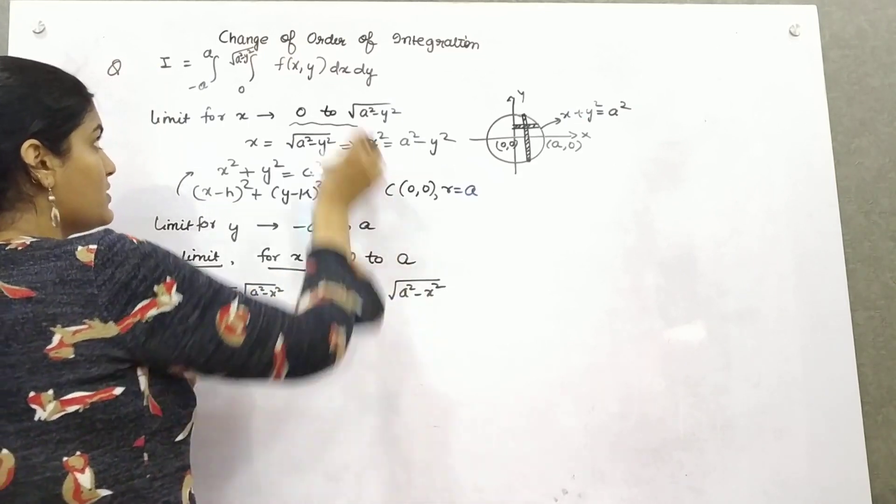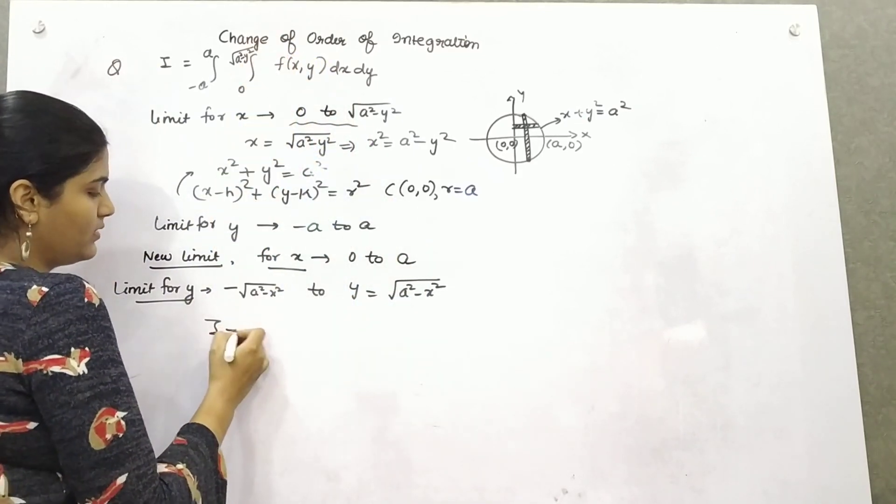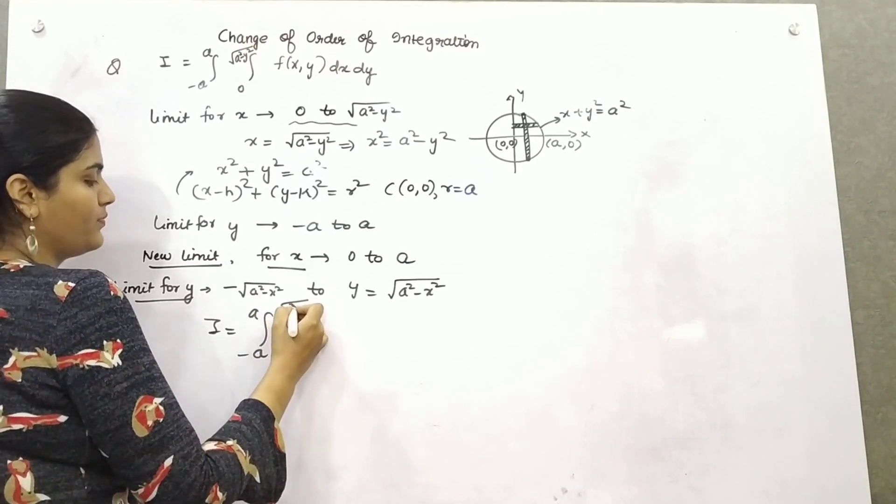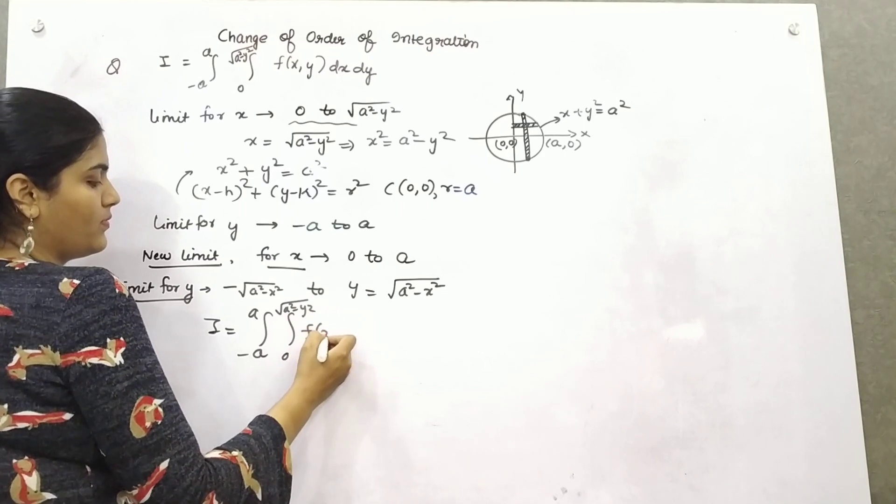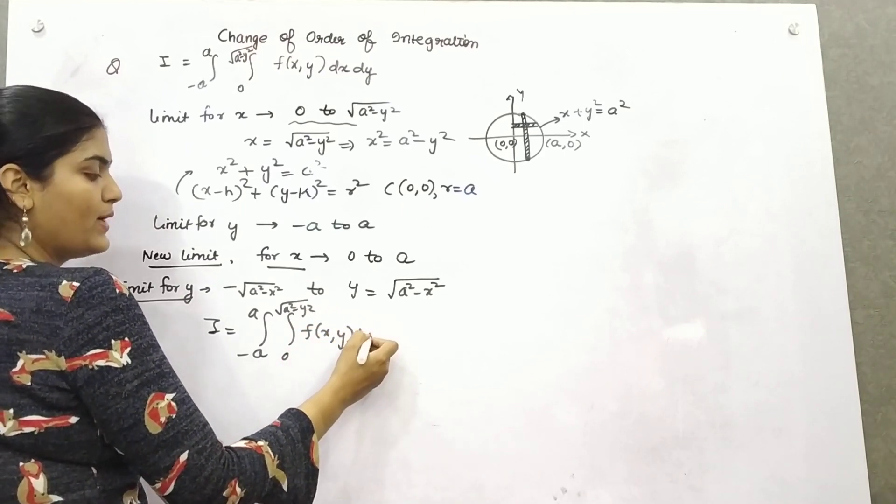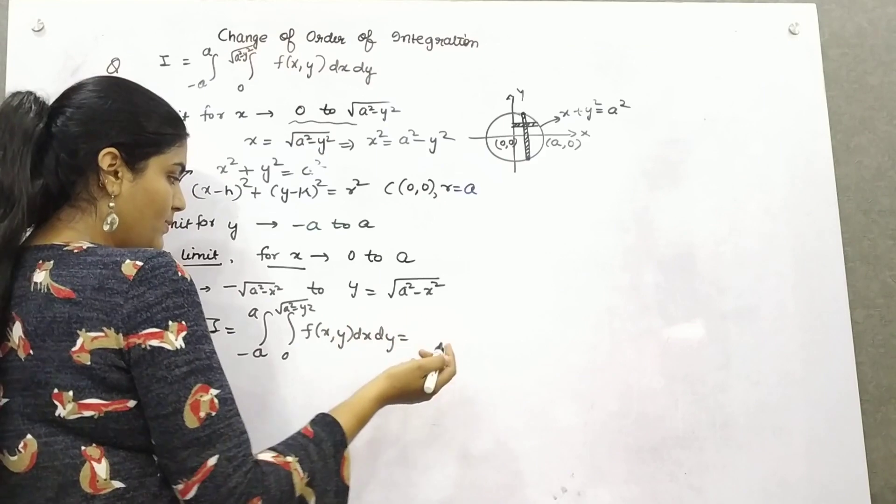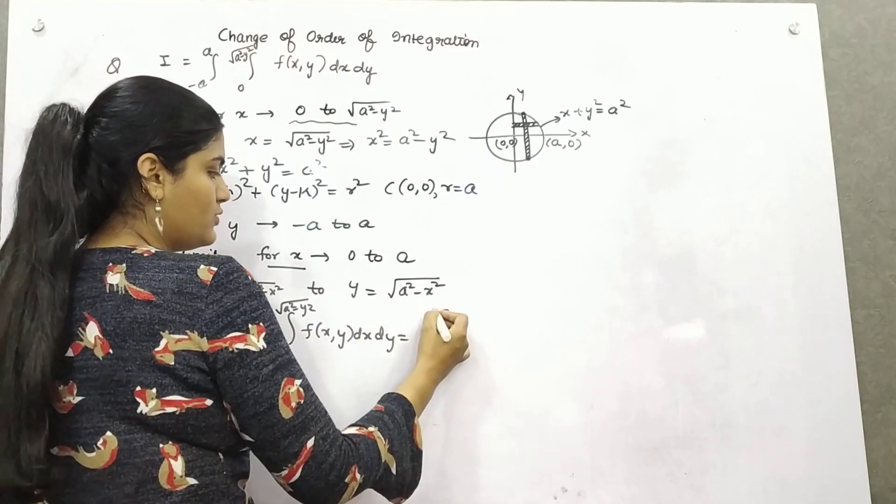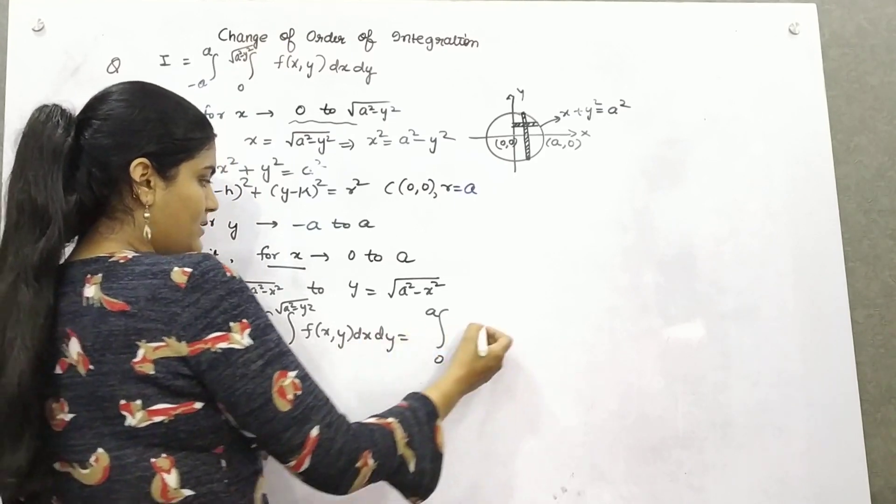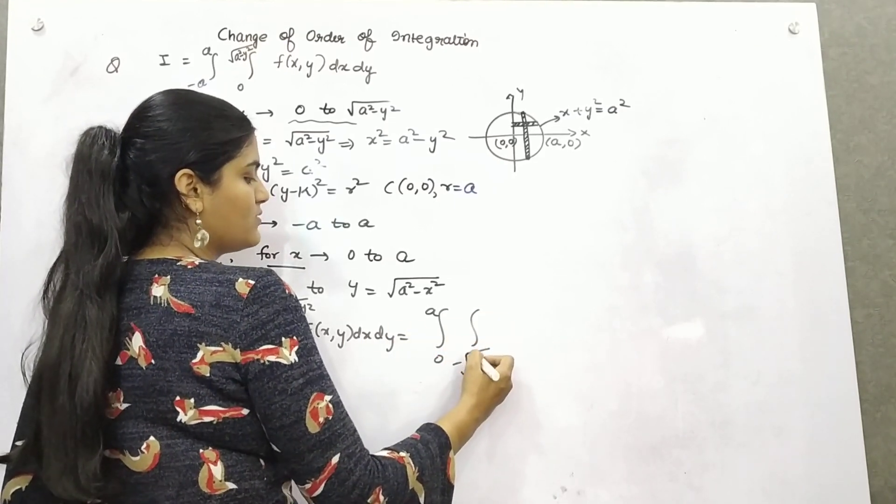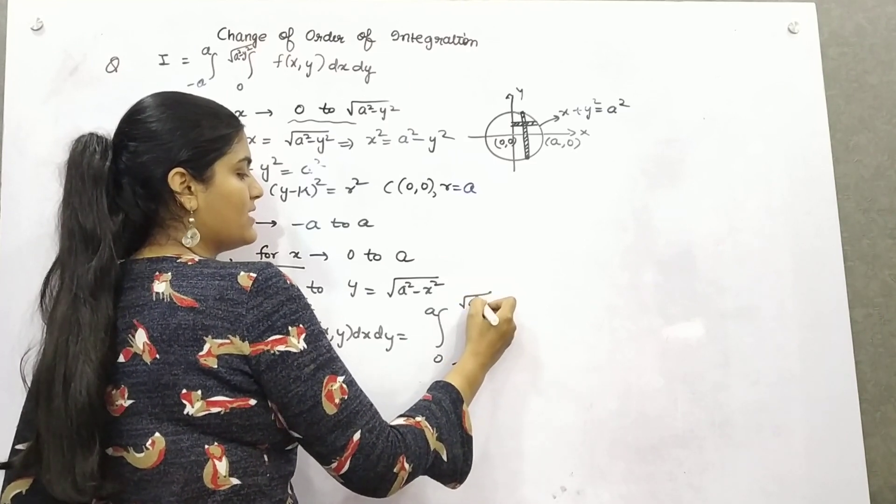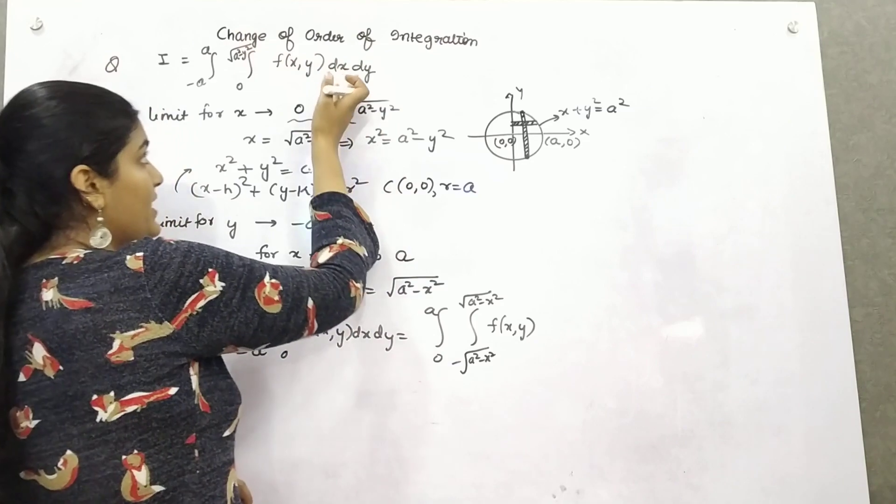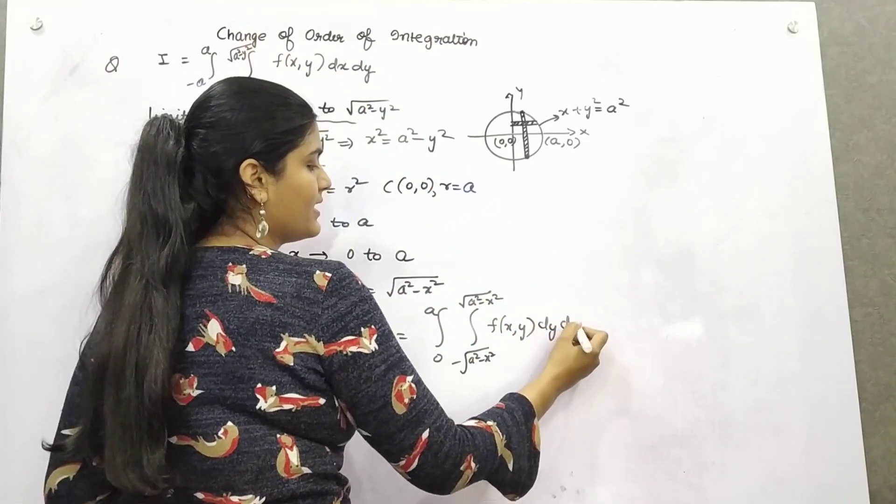Now put these new values into the main equation. You are substituting new limits. So this is now moving from 0 to a, and this is from minus root a square minus x square to root a square minus x square, f(x,y), and change the order: dy and dx.